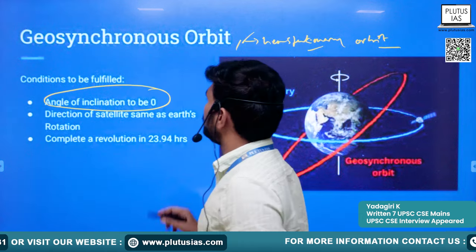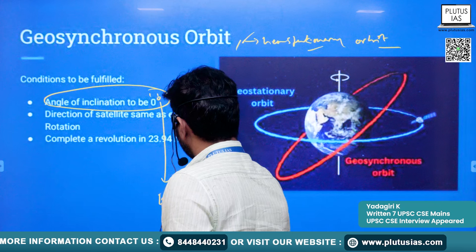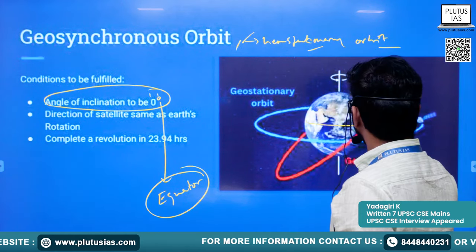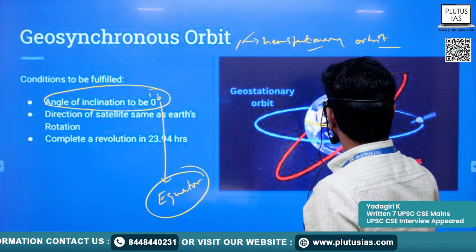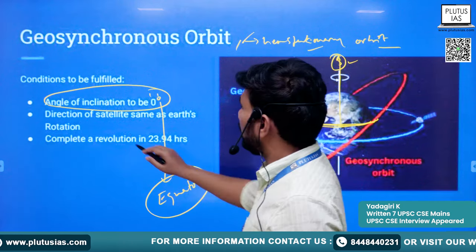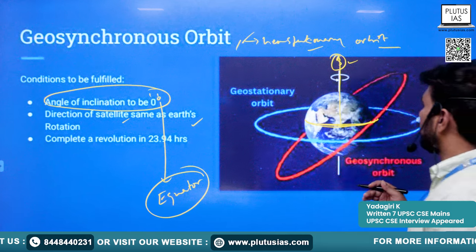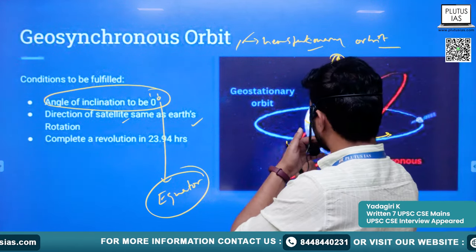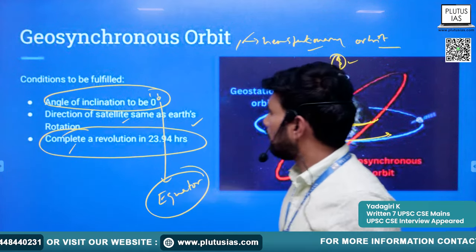The conditions that must be fulfilled in a geostationary orbit are: first, the angle of inclination has to be zero degrees — meaning the satellite should be placed directly on the equator. Second, the direction of the satellite must be the same as earth's rotation. As we know, earth rotates from west to east, so the satellite should also move in that direction.